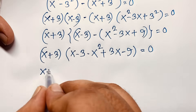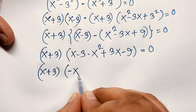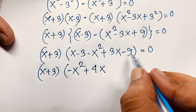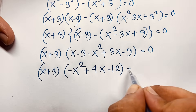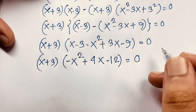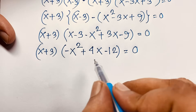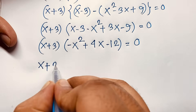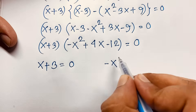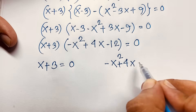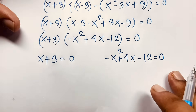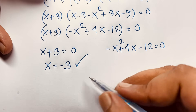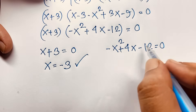So this becomes x plus 3 times negative x squared plus 4x minus 12 equals 0. Now we find two cases: first case, x plus 3 equals 0; second case, minus x squared plus 4x minus 12 equals 0. From the first case, x is equal to negative 3. So our real solution is x equals negative 3.